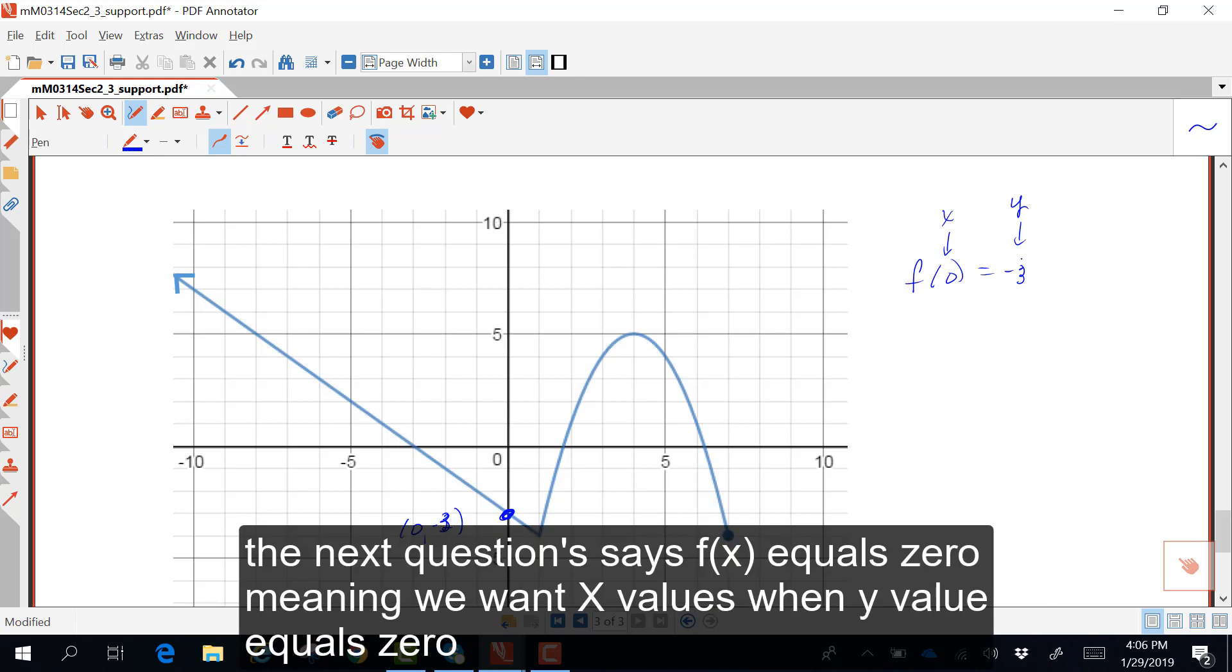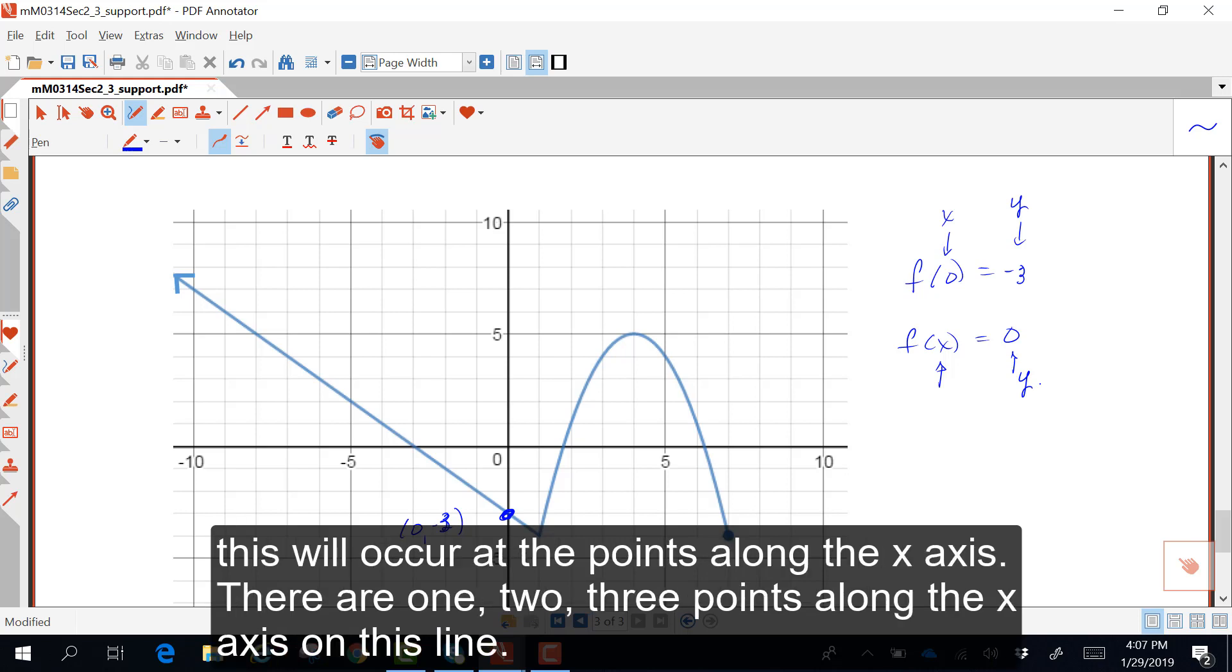The next question says, f of x equals 0, meaning we want x values when the y value equals 0. This will occur at the points along the x-axis. There are 1, 2, 3 points along the x-axis on this line.